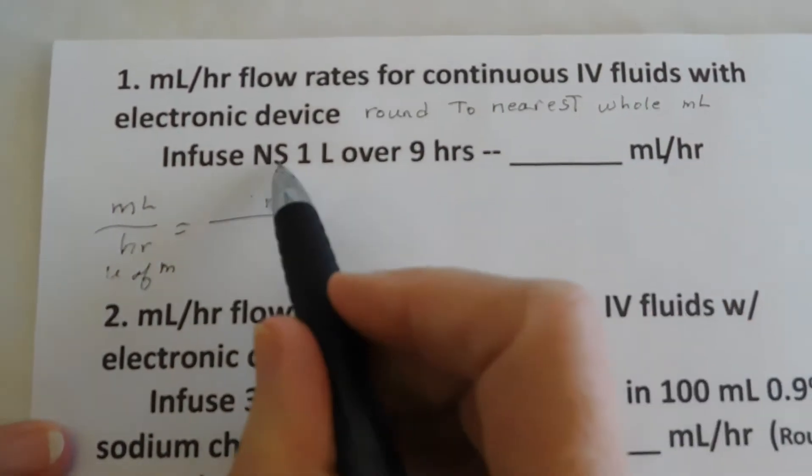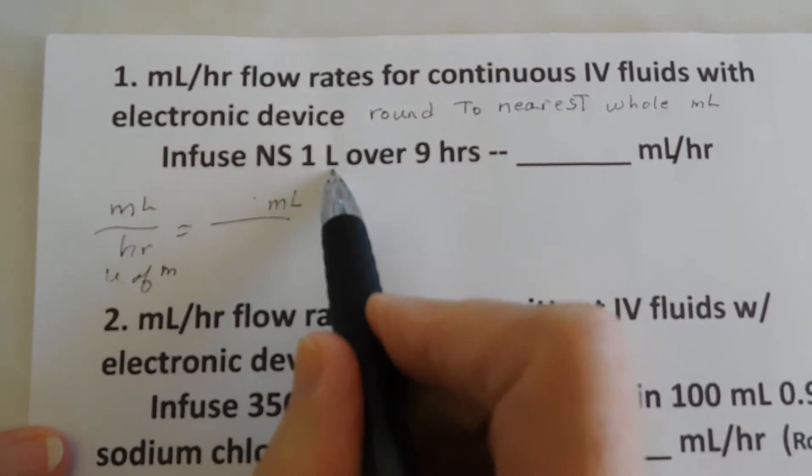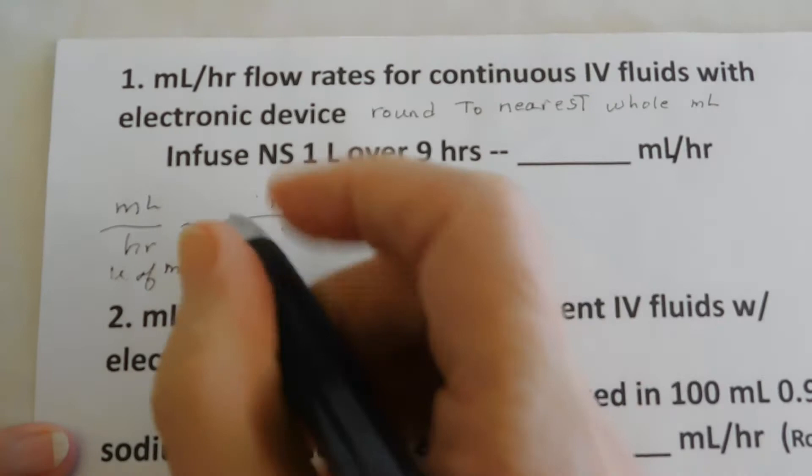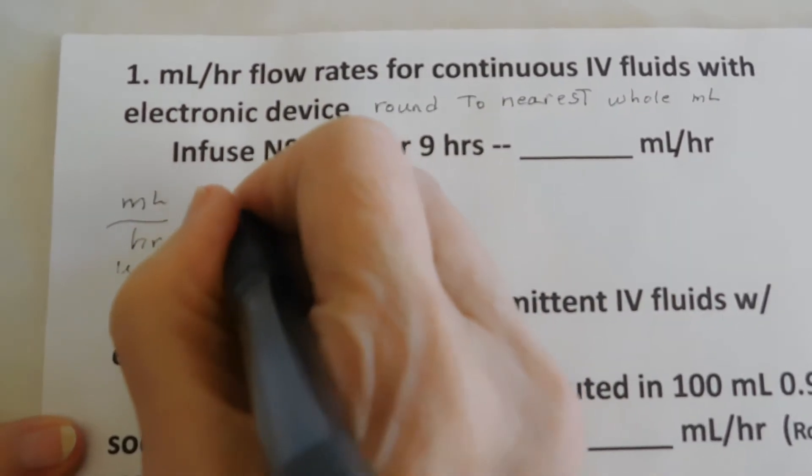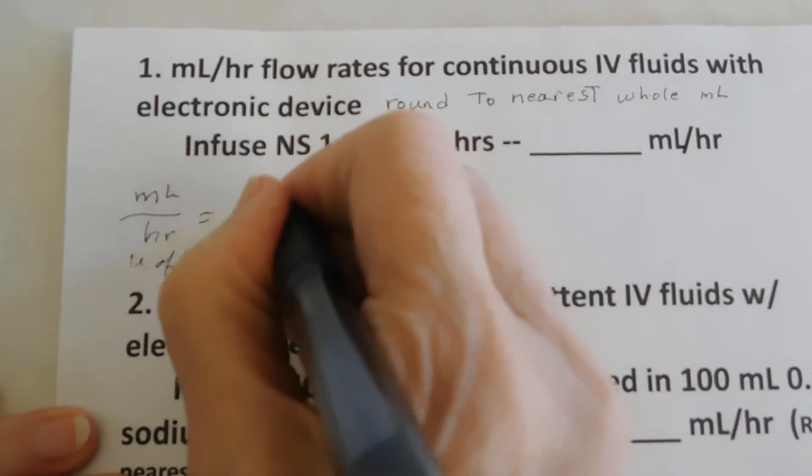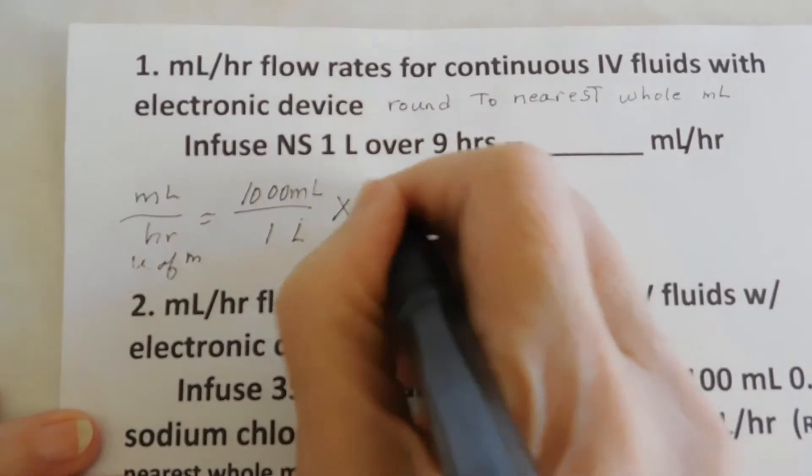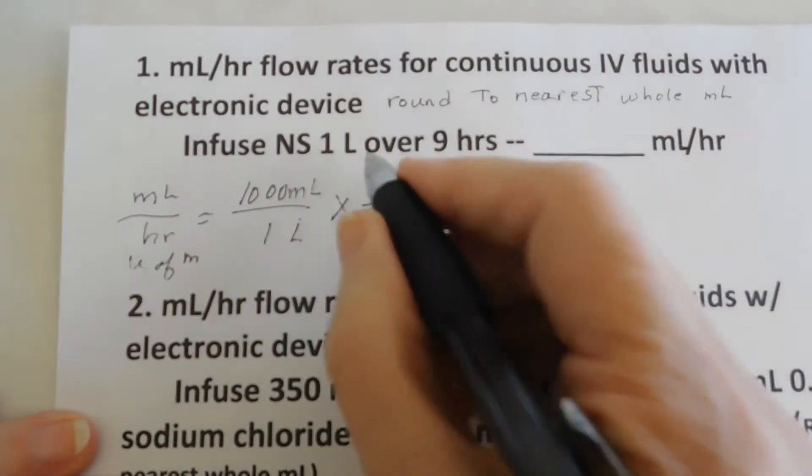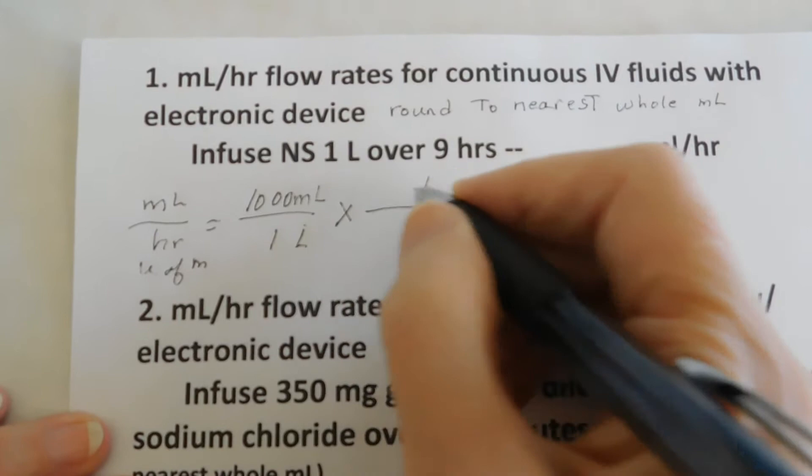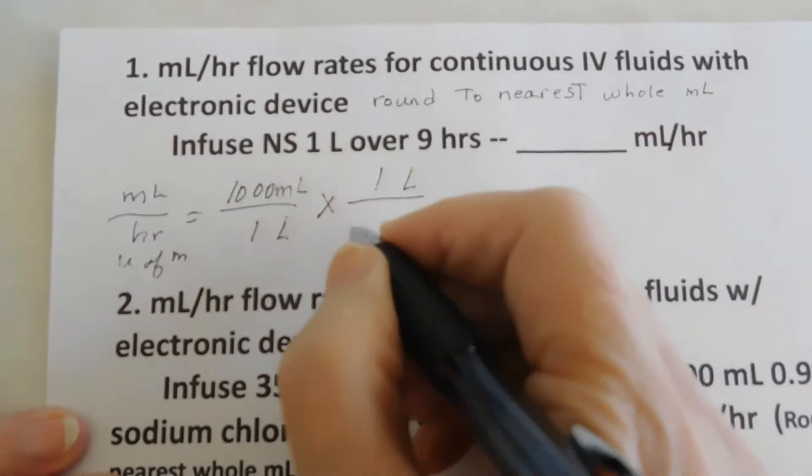What do we have with milliliters? Well, we have normal saline at one liter. So we know that we're going to need a conversion factor. So how many milliliters are there in a liter? There's a thousand milliliters in one liter. Make our next relationship. We know we climb the hill. Liters goes on top. There's one liter over nine hours.